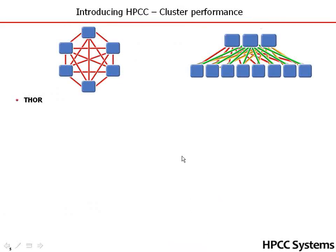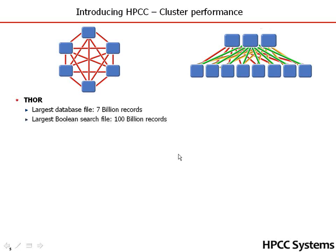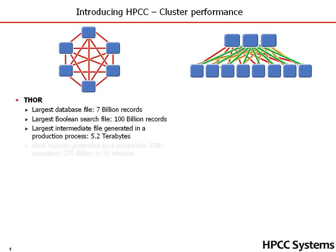Starting with Thor, there are a lot of stats here to show you how powerful it is. The largest database file on our Thor is 7 billion records. Boolean search file: 100 billion records. Intermediate file generated in a production process: 5.2 terabytes. Most records generated by a production join: 278 billion in 20 minutes.